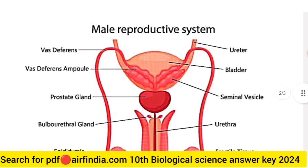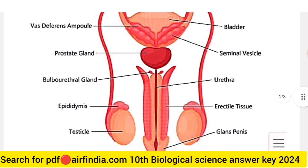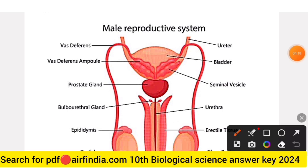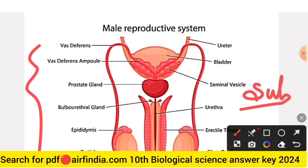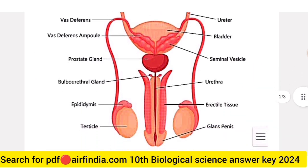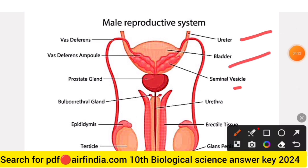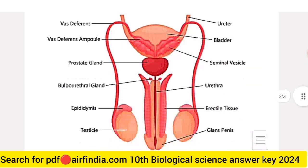Question twelve is a labeled diagram of the male reproductive system. You have to draw it in your notebooks and practice these question papers and answer keys. The diagram labels include: ureter, bladder, seminal vesicle, urethra, prostate gland, and vas deferens.